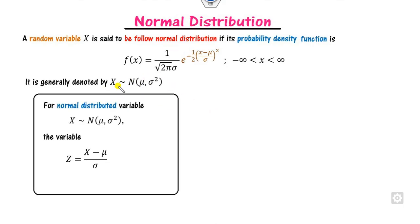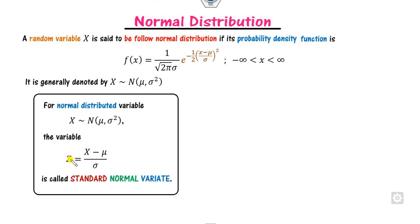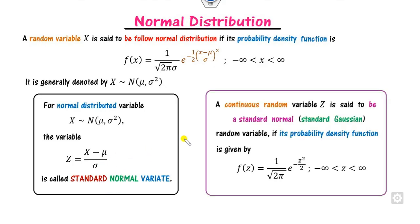On the other hand, if a random variable x follows the normal distribution, we can define the variable z as (x minus mu) divided by sigma. This z is called the standard normal variant, sometimes abbreviated as SNV. Based on this standard normal variant, we can define the probability density function of z.